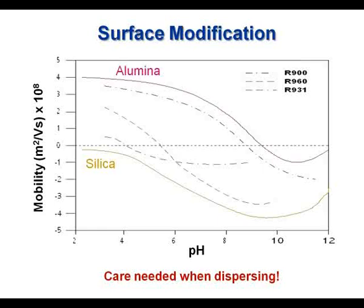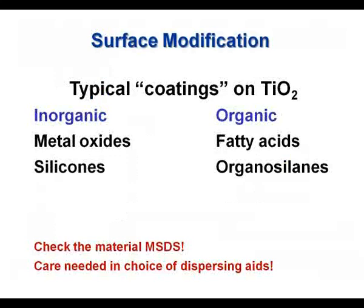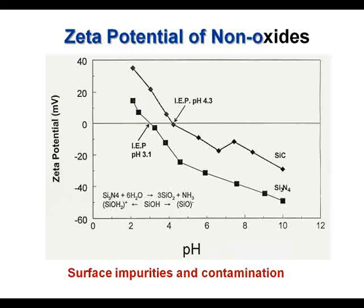Titanium dioxide is widely used but virtually all titanium dioxides are coated — ranging from inorganic to organic coatings — and it is the coating that determines the surface chemistry of the material. Measurement of zeta potential should therefore be considered an important metric in quality control. Many materials contain surface impurities and contamination, and measurement of zeta potential can provide practical, useful information. Data for two non-oxides — silicon carbide and silicon nitride — show that if completely pure, these materials will be relatively hydrophobic and not exhibit an isoelectric point. However, zeta potential measurements as a function of pH reveal that both materials have an effective surface charge, and can also reveal batch-to-batch and lot-to-lot variations in manufacture.